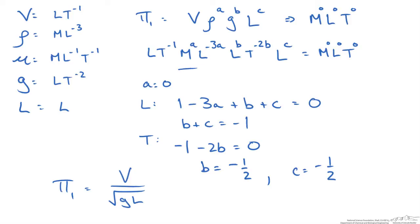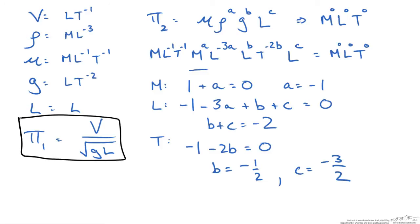Now we repeat this process for the second pi group and I will show you the work here. So this is the work you should get when you repeat this for the viscosity term. Which means that our second pi group will be viscosity over density times length times the square root of g over L.